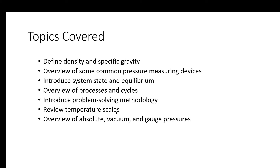We'll look at different temperature scales: Kelvin, Rankine, Fahrenheit, and Celsius. We'll also cover different types of pressure — absolute pressure, vacuum, and gauge pressure. Gauge pressure is just relative to the atmosphere outside. For example, if you measure the pressure in a tire, that would be your gauge pressure. Vacuum pressure is defined between 0 psi and atmospheric pressure, and absolute pressure is relative to 0 psi — a completely evacuated chamber lacking any air pressure.